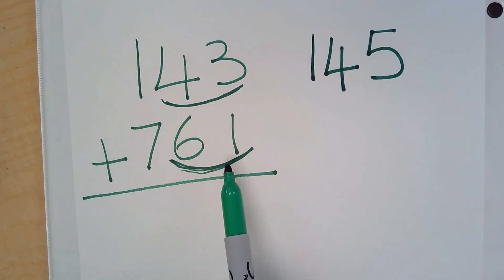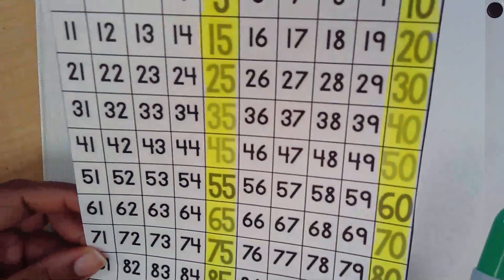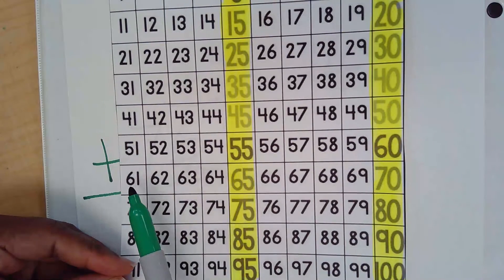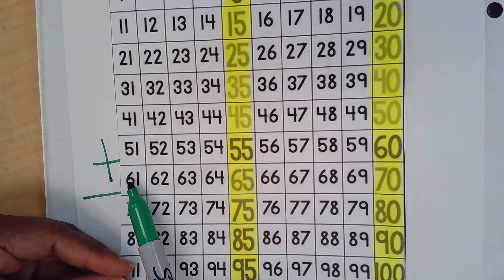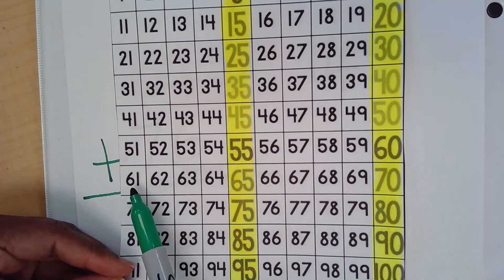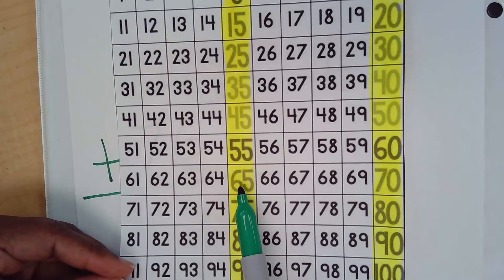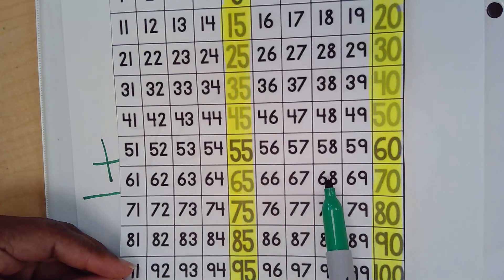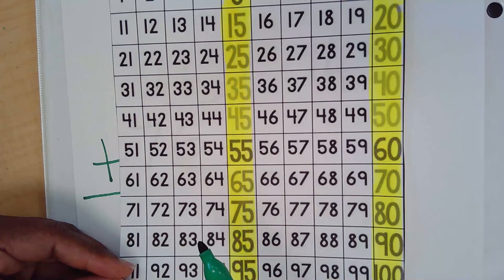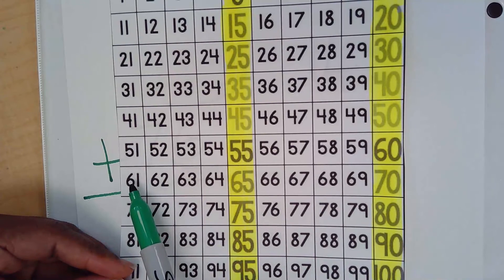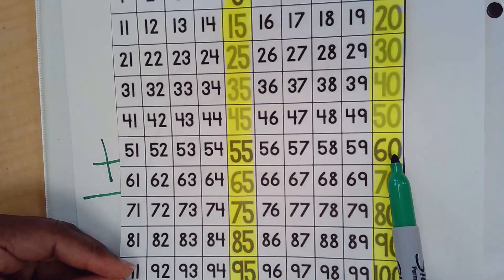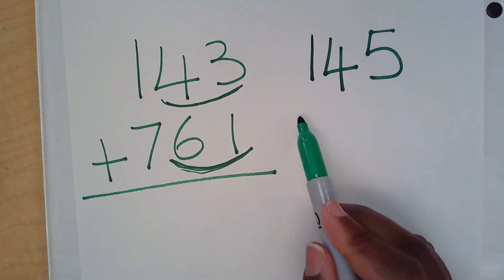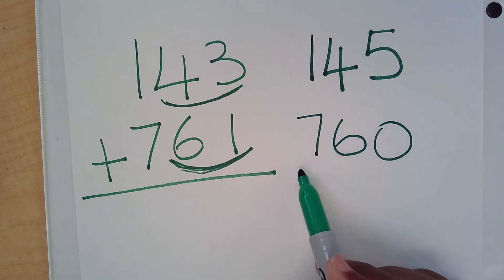Now 761, we would look for 61 on our hundreds chart. Now is 61 closer to 65? Is it closer to 70? Or is it close to 60? Let's look. Well, 1, 2, 3, 4. It would take 4 jumps to get to 65. 1, 2, 3, 4, 5, 6, 7, 8, 9 jumps to get to 70. How many jumps would it take to get to 60? One. Because right before 61 is the number 60. So our best or most compatible number would be 760.